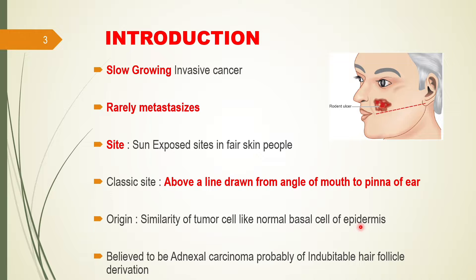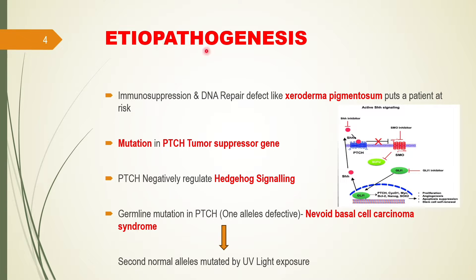Its morphology is similar to that of the basal cells seen in our epidermis, which is why the name is basal cell carcinoma. Regarding etiopathogenesis, basal cell carcinoma can occur in an immunosuppressed individual in which immunity is defective, or if the patient has a DNA repair defect - particularly if the patient has xeroderma pigmentosum, a genetic condition that puts a patient at risk of developing BCC because the mutated DNA will not get repaired.